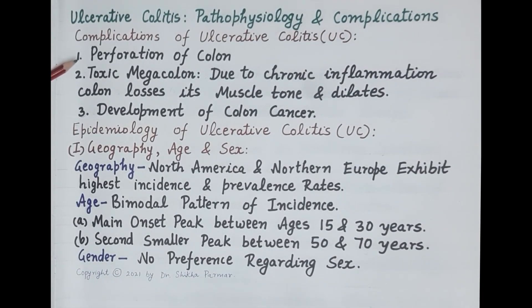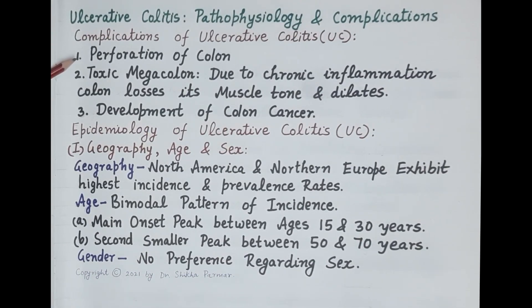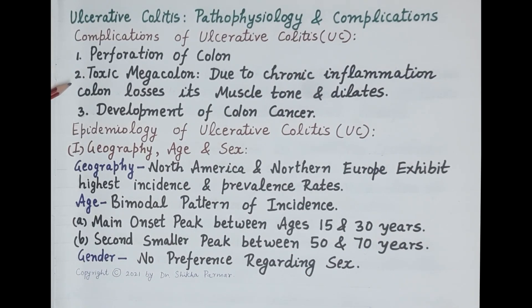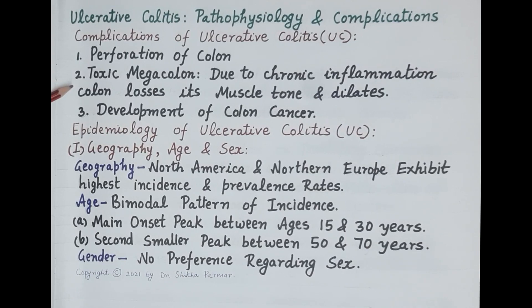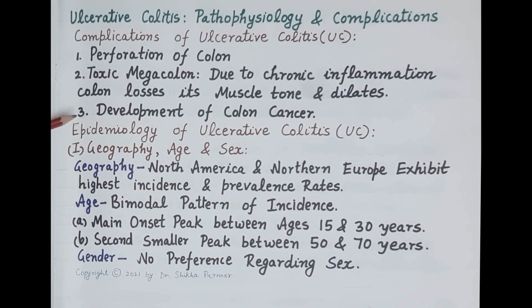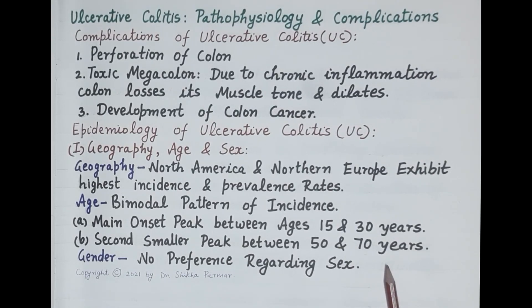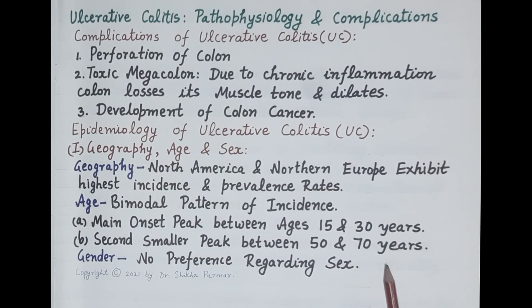Complications of ulcerative colitis include: perforation — formation of holes in the wall of the colon; toxic megacolon — where chronic inflammation causes the colon to lose its muscle tone and dilate completely; and development of colon cancer. That concludes this overview of the pathophysiology, symptoms, and complications of ulcerative colitis. If you found the video useful, please like, subscribe, and share.